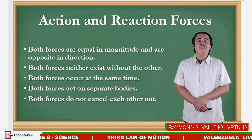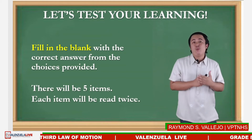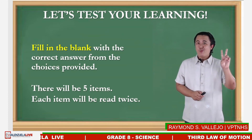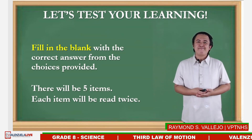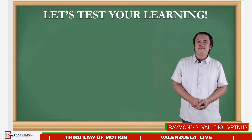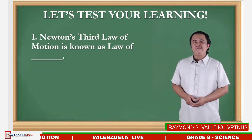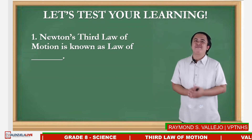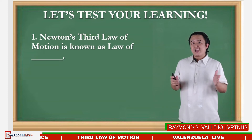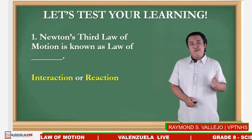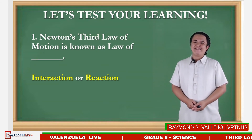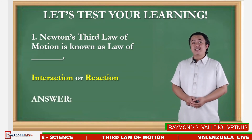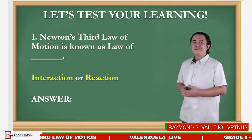Let us now test how much you have learned. For each item, fill in the blank with the correct answer from the choices provided. There are five items. Item one: Newton's third law of motion is known as the law of blank — choices are interaction and reaction. The correct answer is Newton's third law of motion is also known as the law of interaction.